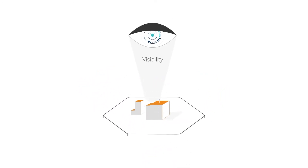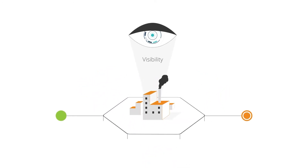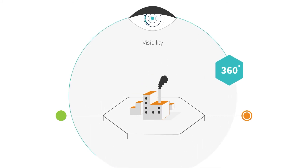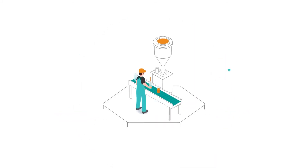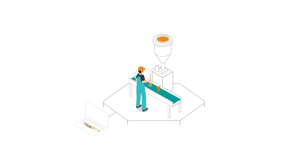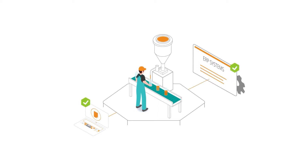The solution? Orchestrate processes across the supply chain to enable a 360-degree view of operations. With this approach, new apps, ERP systems, machinery and employees can work together in harmony.